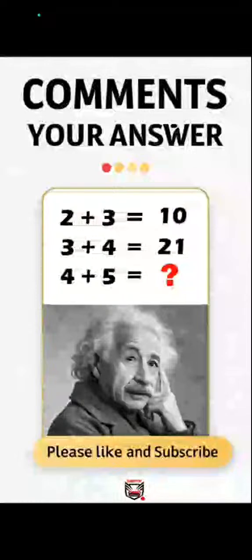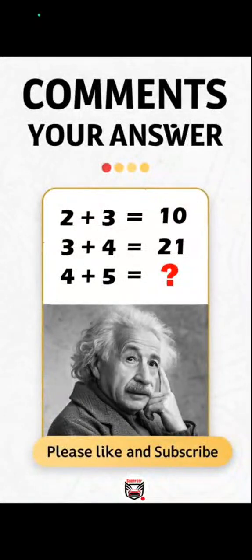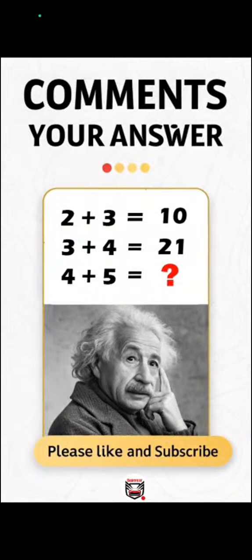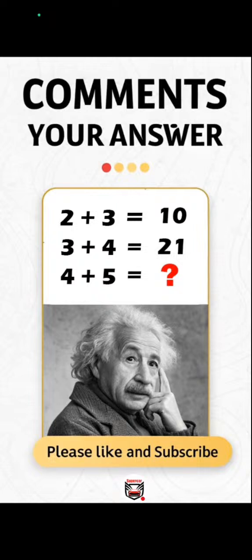We'll start with the equation. 4 plus 5 equals question mark. Step 1, add them. 4 plus 5 equals 9. Step 2, multiply by the first number. 9 times 4 equals 36. Boom.